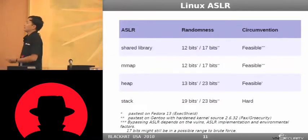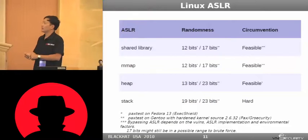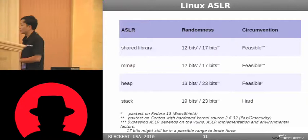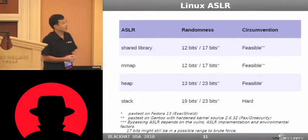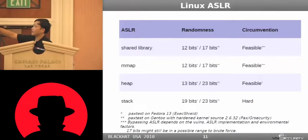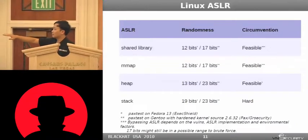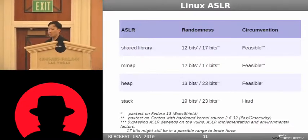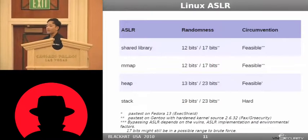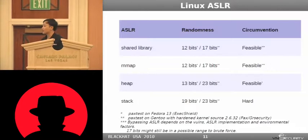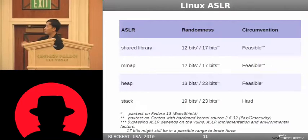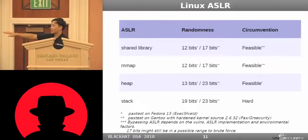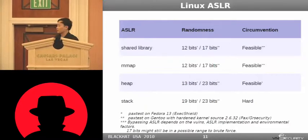How about the Linux ASLR implementation and how difficult is it to bypass? The shared library, mmap, heap, and stack addresses are all randomized. The stack address is the most difficult to bypass because it has high entropy randomness — about 19 bits on Fedora 13, or 23 bits on Gentoo hardware. So it is very difficult to bypass.